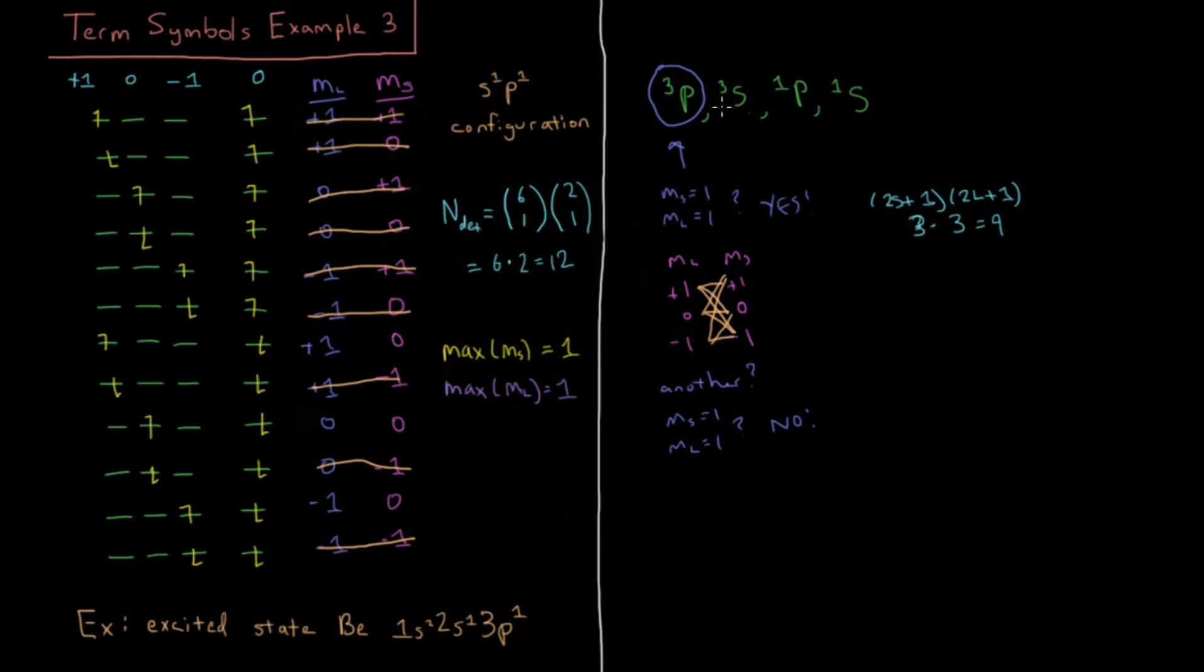Our next thing we're looking for is if there is a triplet S. So a triplet S would be m sub s equals 1 for triplet, m sub l equals 0 for S. Do we have a term symbol where we have m sub s equals 1 and m sub l equals 0? I do not see one, so we are going to say that we do not have a triplet S.